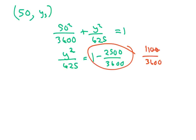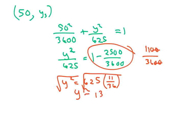Cross multiplying gives $y^2 = 625 \times \frac{11}{36}$. You square root both sides and get $y = 13.82$ feet. So that is your third height at $(50, 13.82)$.